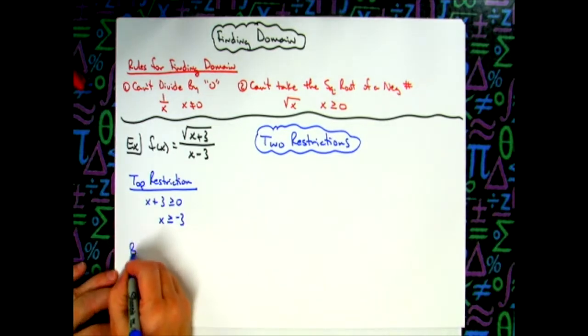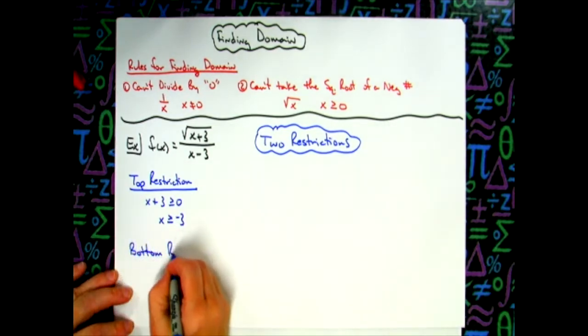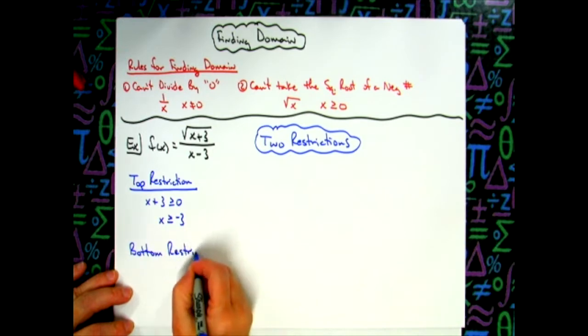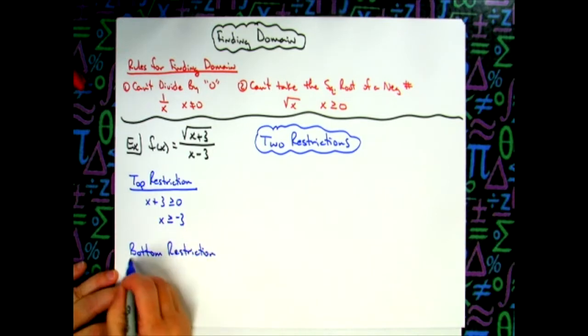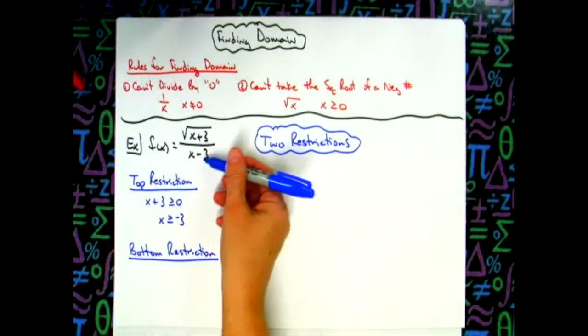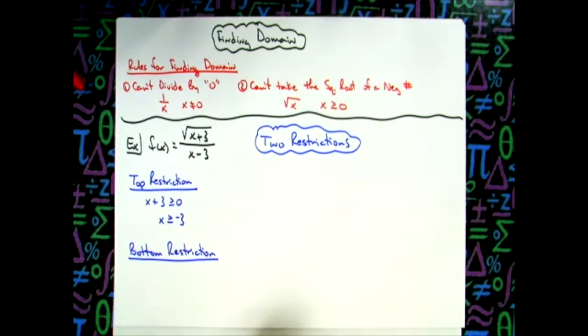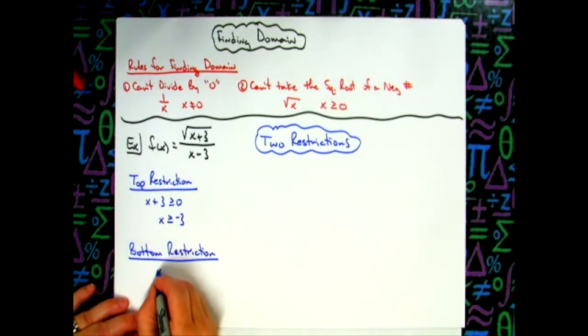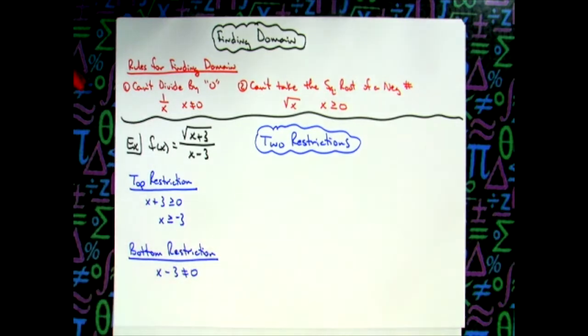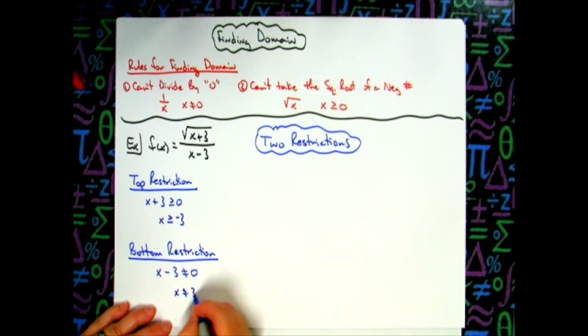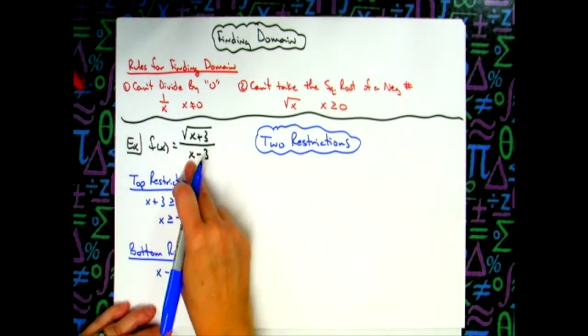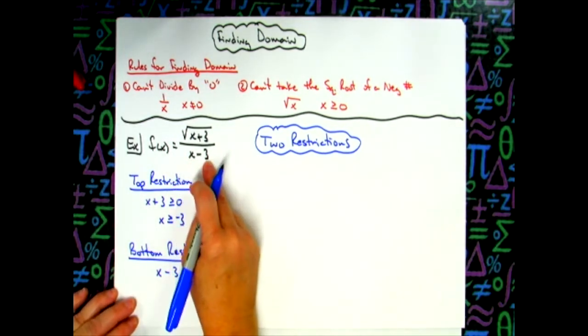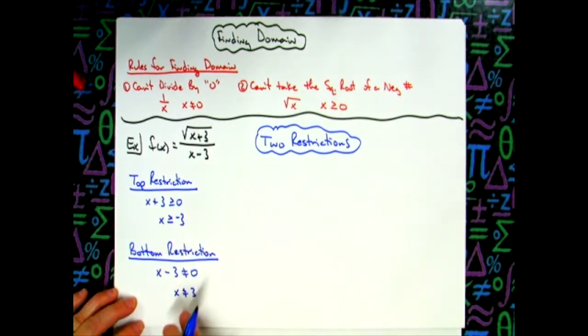Now if we take a look at that bottom restriction. Our bottom restriction since it is in the bottom of a rational function here, that bottom cannot equal zero. So the only thing I have to do is I have to set the bottom equal to zero. So x minus three not equal to zero. I'm trying to find the values that will make it zero. So I want exclusions here. Add three to both sides, X cannot equal three. If x were three then that bottom would be zero. So this is my exclusion here.